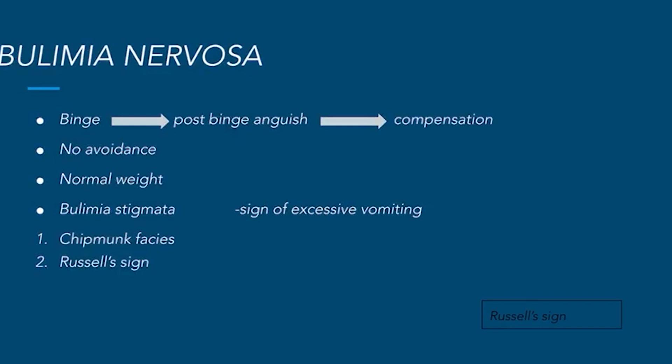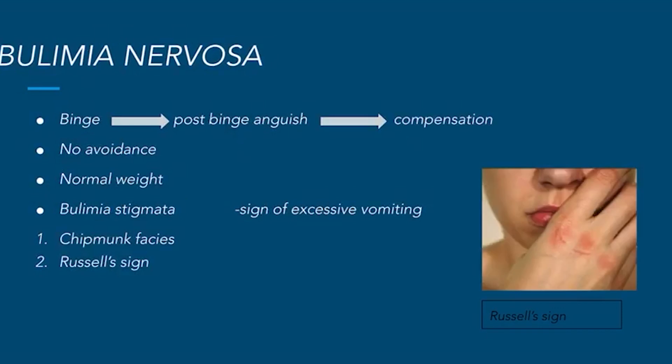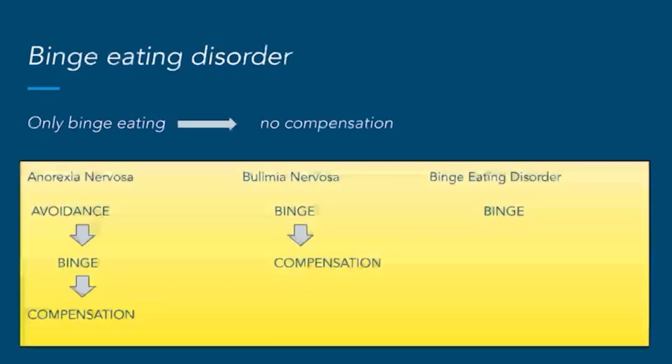The next disorder is bulimia nervosa. Bulimia is a term for ox hunger. In these patients there is binge eating followed by post-binge anguish followed by compensation, but there is no avoidance and they typically maintain normal weight. These two points — normal weight and no avoidance — basically differentiate bulimia nervosa from anorexia nervosa.